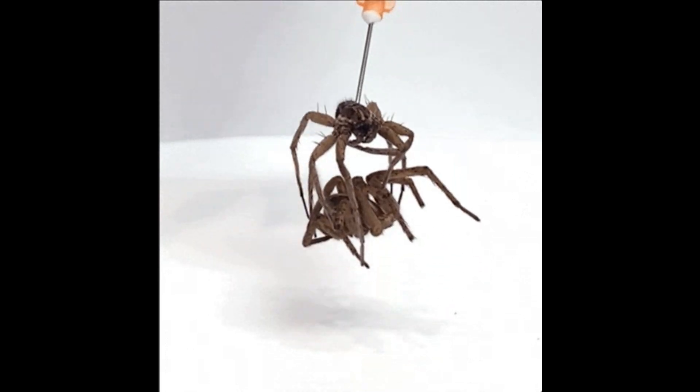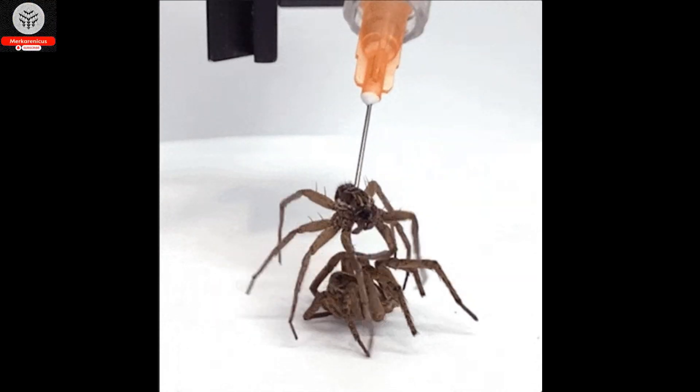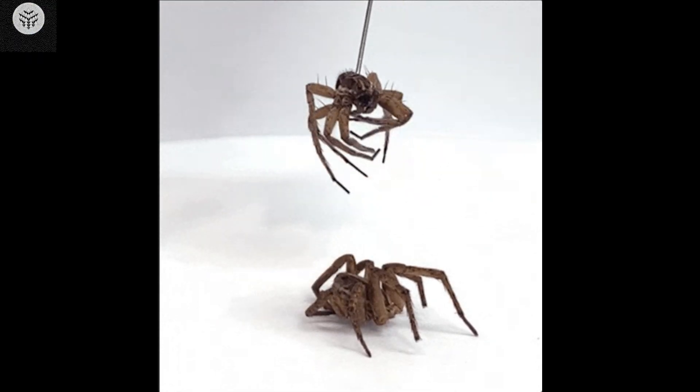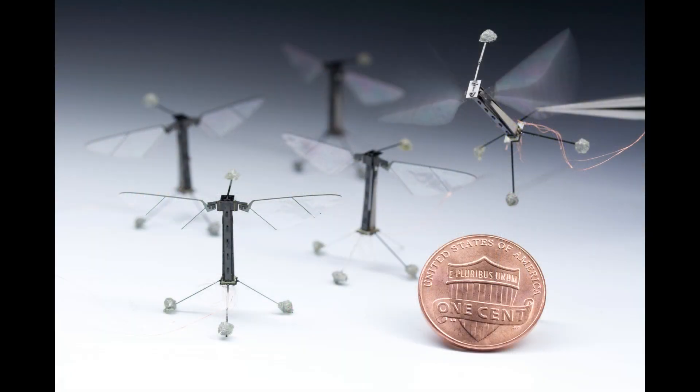The scientists aim to replicate a different species of insect and create a robot resembling a water strider, capable of traversing both the water's surface and its depths. Additionally, they are exploring the utilization of miniature batteries or catalytic combustion to achieve complete autonomy and eliminate the need for a connected power source in their robots.